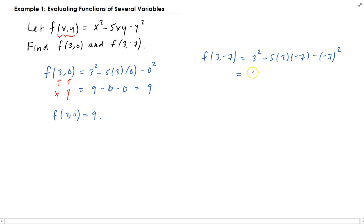So we get 3 squared which is 9, minus 5 times 3 times negative 7. That's going to give us positive 105, and then minus 49. So minus 7 squared is 49, and then you have a minus here. So 9 plus 105 minus 49 will give us 65.